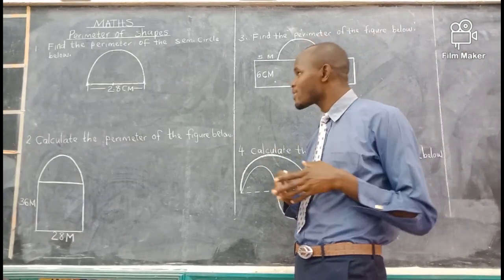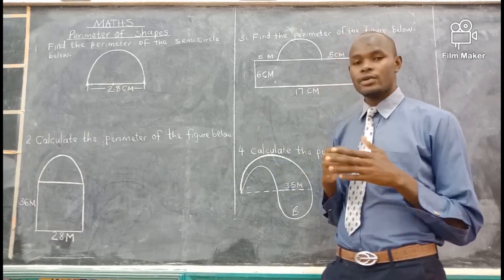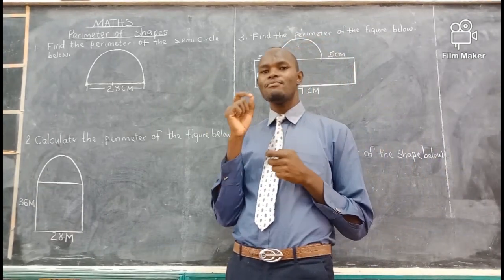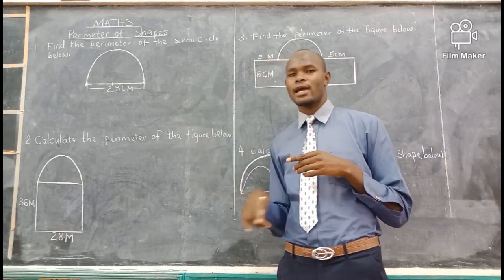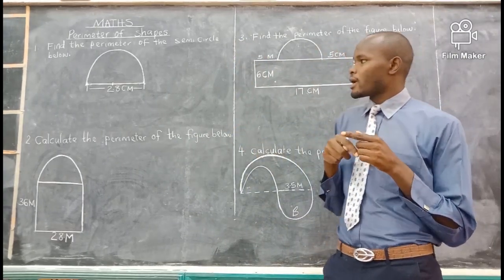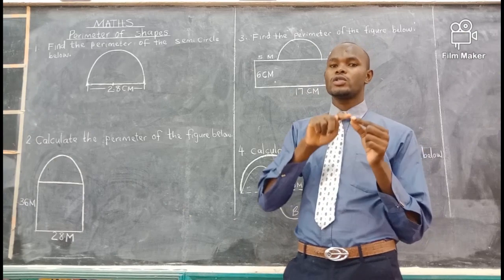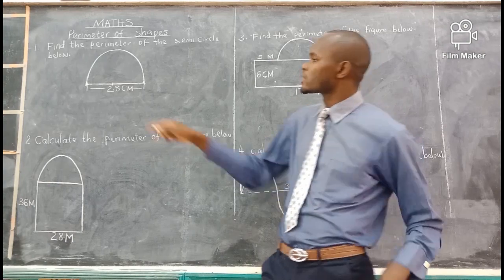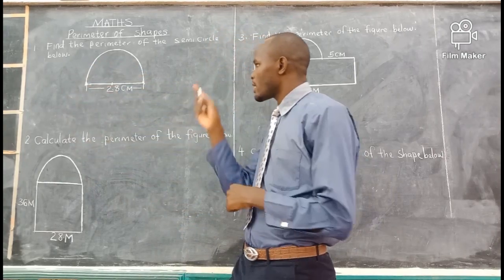Hello, my fellow mathematicians. We are going to discuss the perimeter of shapes. Before we go to the examples, you need to ask yourself: what is the meaning of perimeter? Perimeter means you go around a figure from where you started until you come back to where you started. For instance, you can use an example of athletic running — when you run around a track or a field, you start from a point and go around until you come back.